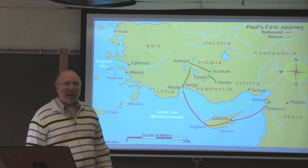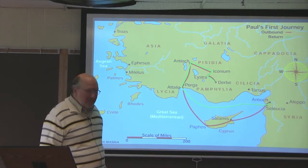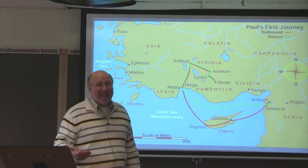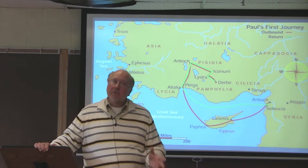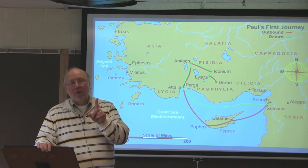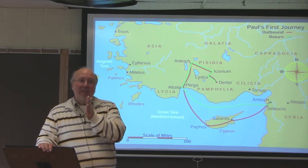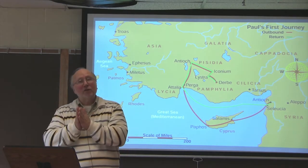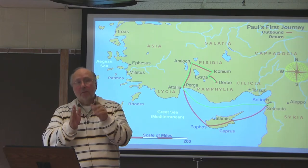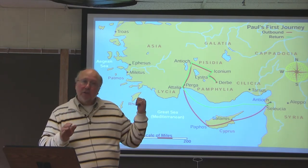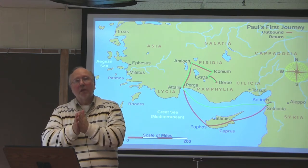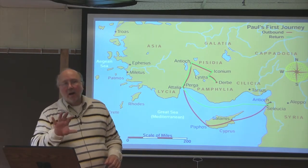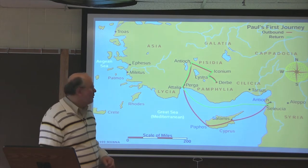Here's a more schematic or cartoon version of what's happening. This is the first missionary journey, basically 46 to 48 AD. I don't do much with dates, but there's one date I want you to know: 50 AD is the Jerusalem Council. When did the first missionary journey take place? Before the Jerusalem Council. So this first missionary journey takes place just before the Jerusalem Council at 50 AD — basically 46 to 48 AD.